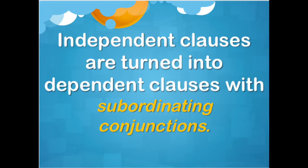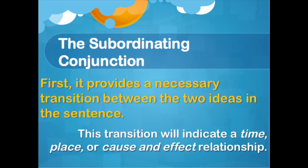So how do we make a thought incomplete? Well, thoughts are incomplete when they leave the reader hanging. In talking about clauses, you can make an independent clause dependent by adding a subordinating conjunction to the beginning of an independent clause.